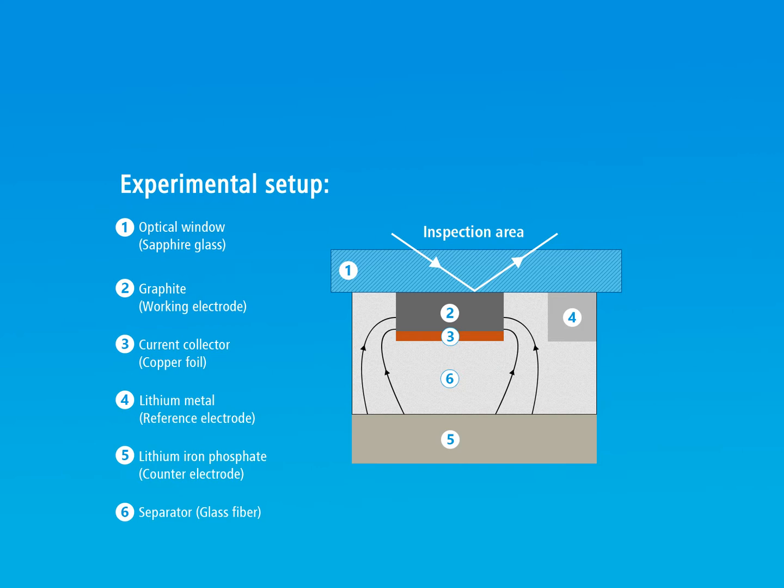After assembly, the test cell was removed from the glovebox and placed below the objective of an optical microscope at 50 times magnification and connected to a potentiostat.